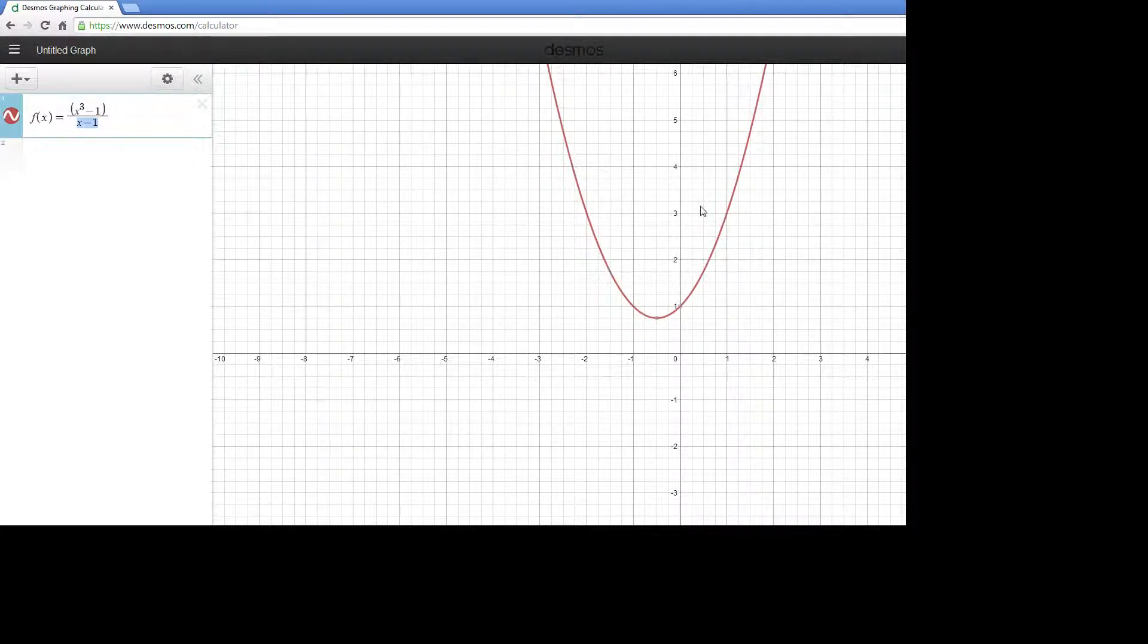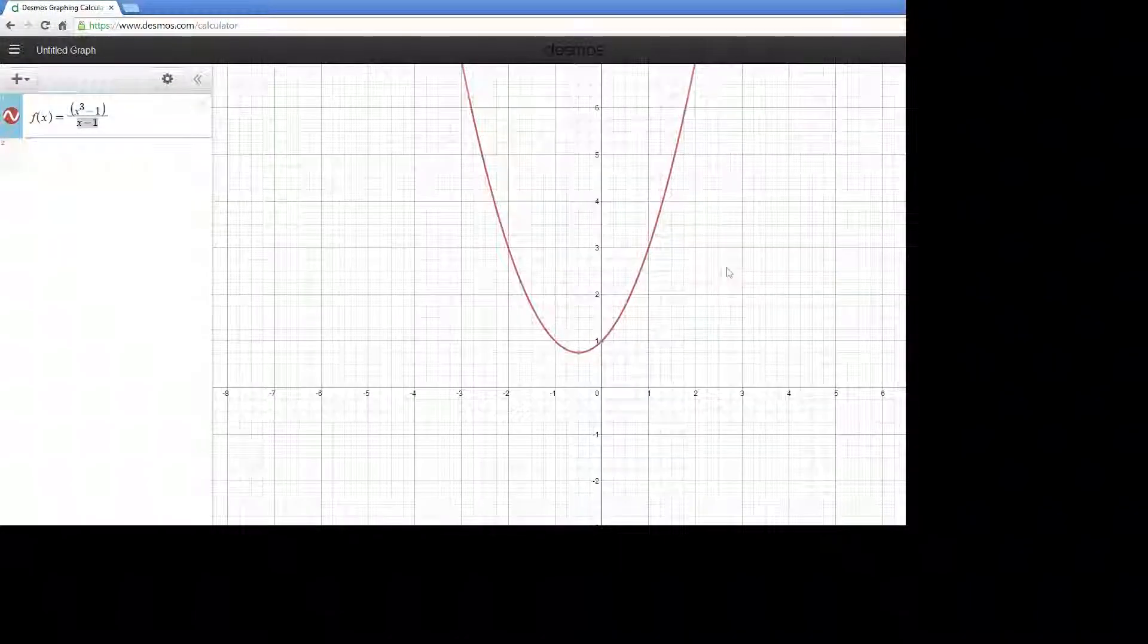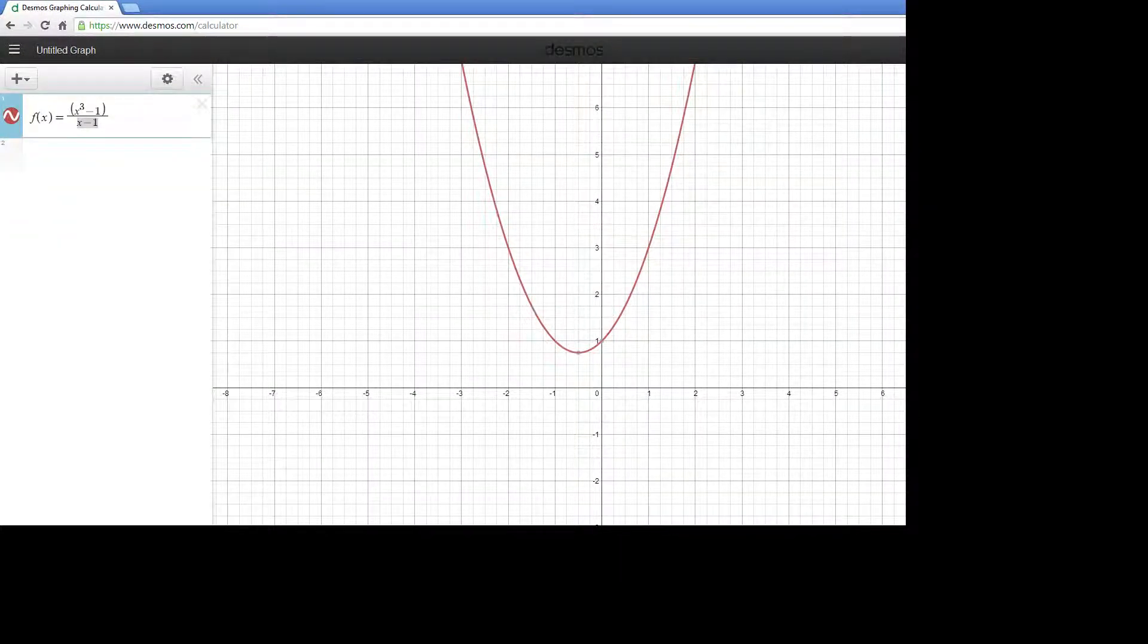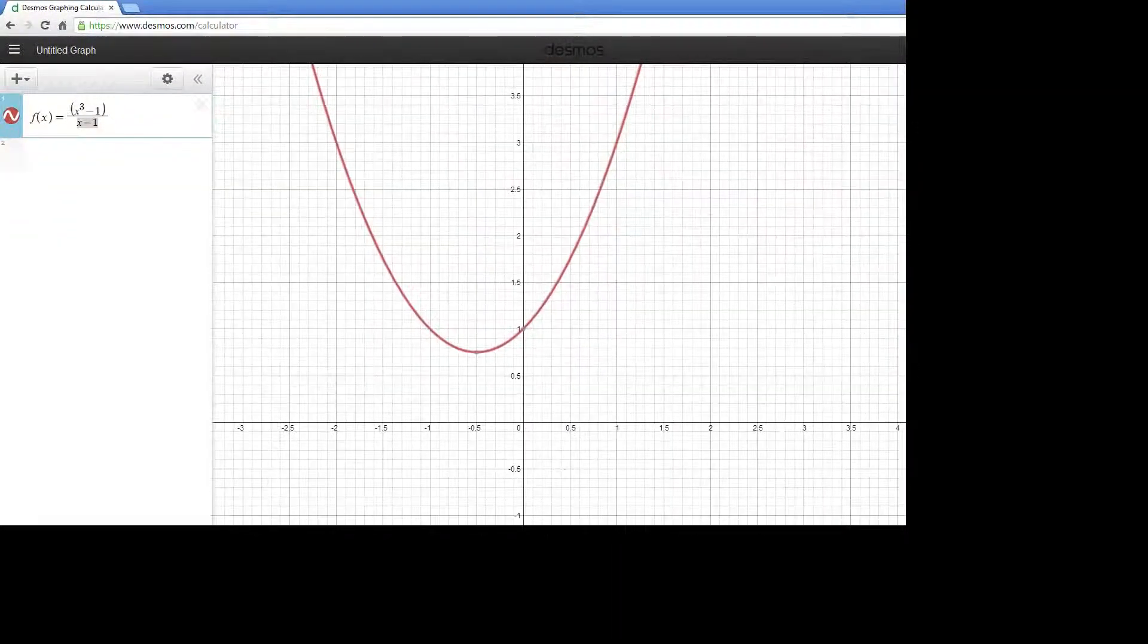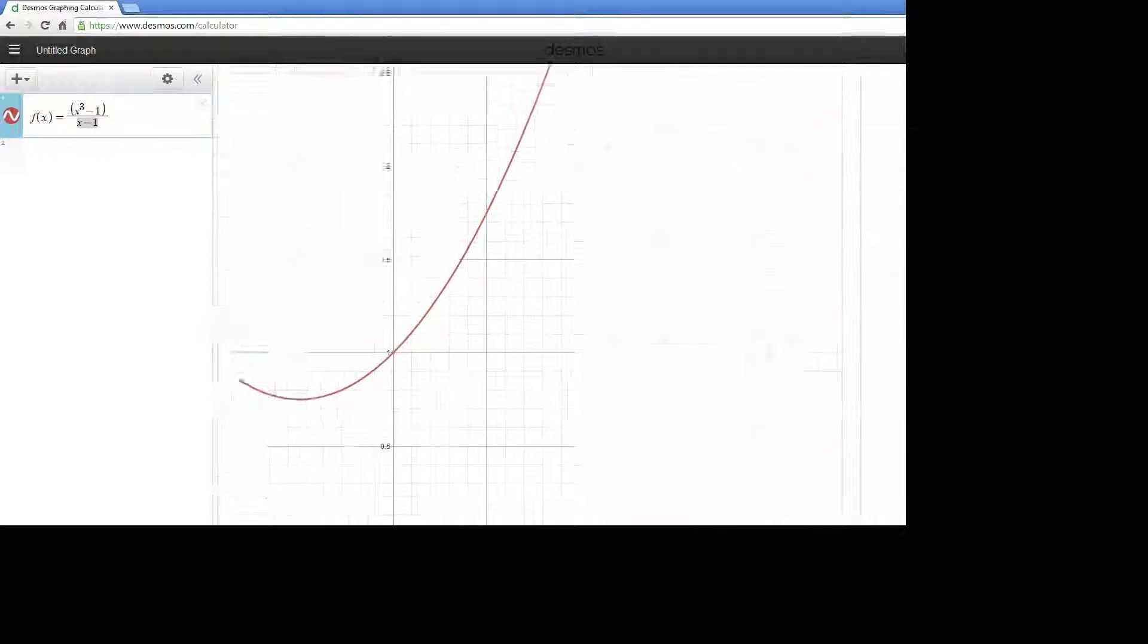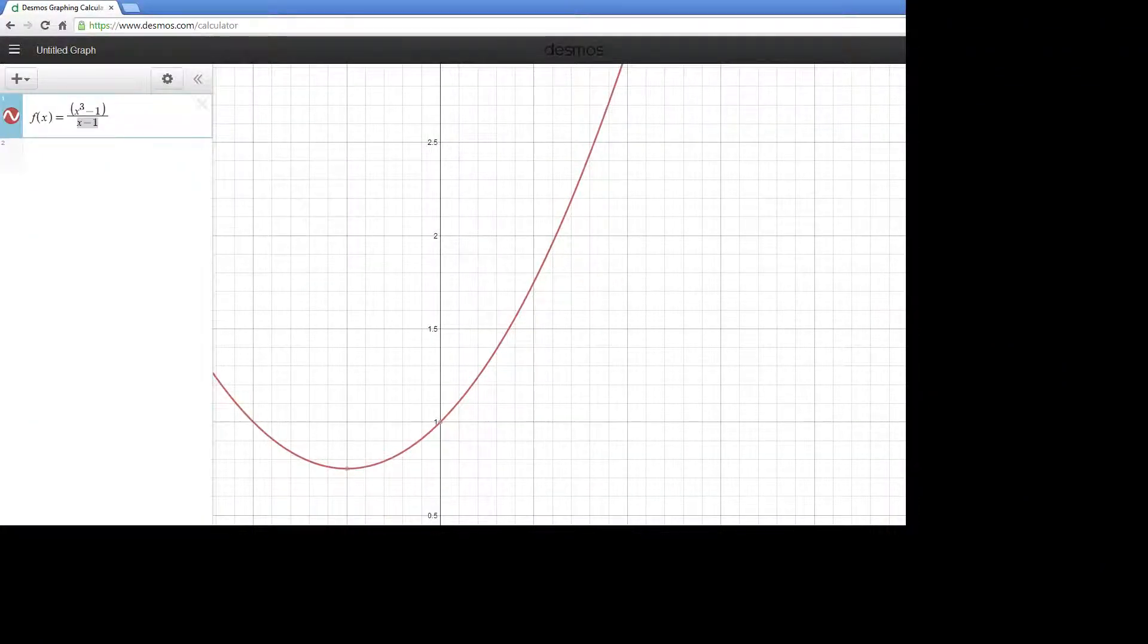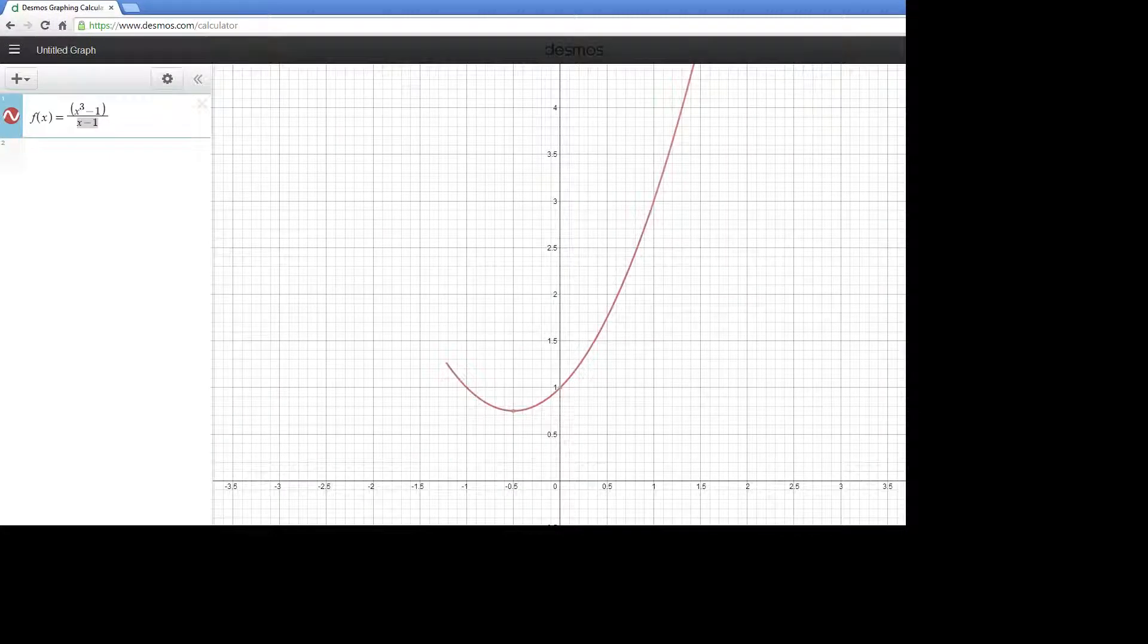One of the things you can do with the graph is look and see what happens to this function as I get closer to 1 from the left. Coming in here, you can see that the graph gets closer and closer to 3.